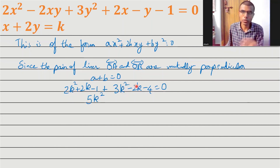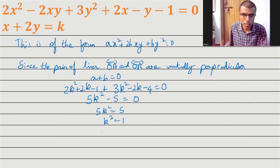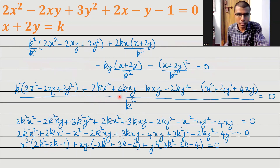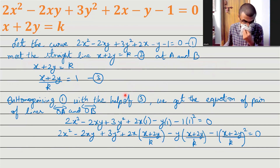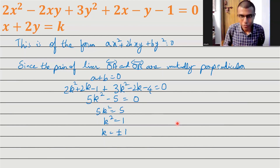Simplifying: 2k² plus 3k² is 5k², and 2k minus 2k is 0, and minus 1 minus 4 is minus 5. So 5k² minus 5 equals 0, giving k² equals 1, and therefore k equals plus or minus 1. To give a quick summary: we got the pair of lines OA and OB by homogenizing, then applied the perpendicularity condition (coefficient of x² plus coefficient of y² equals 0) to find k equals ±1. Thank you — if you liked this video please hit like and subscribe.